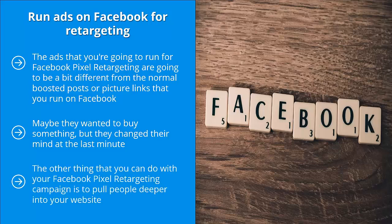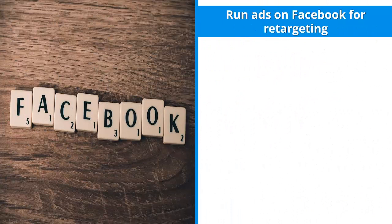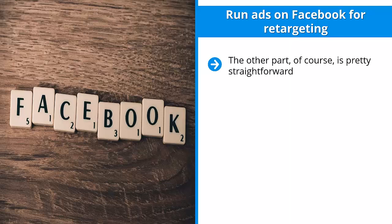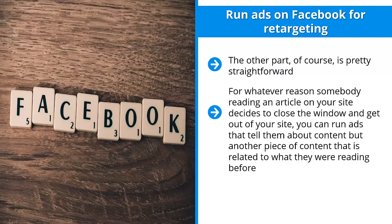The other thing you can do with your Facebook pixel retargeting campaign is pull people deeper into your website. A website is typically composed of two parts. The first layer is the content layer — you're trying to get people to know about the problem, like your particular solution, and eventually trust the solution enough so they can buy. A lot of people go through the content layers but never make it to the actual buying part — they never make it to your conversion page. This is where retargeting ads that pull people deeper into your website make a lot of sense. You can run ads about related content, which pushes them further down the conversion funnel.